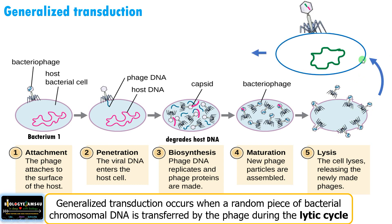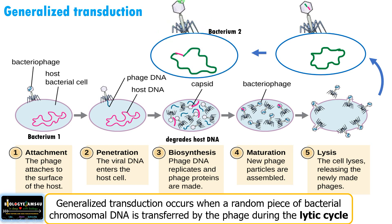These phages may then infect another bacterium — bacterium two. As you can see, this phage is carrying some DNA of the previous host. When this phage infects bacterium two it injects the DNA, and sometimes this DNA gets integrated into the genome of bacterium two by homologous recombination. So bacterium two now has a DNA fragment from bacterium one.